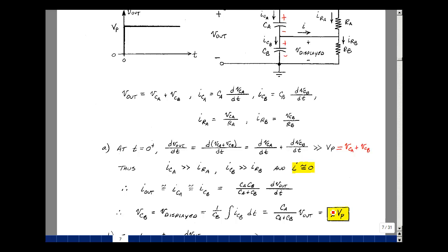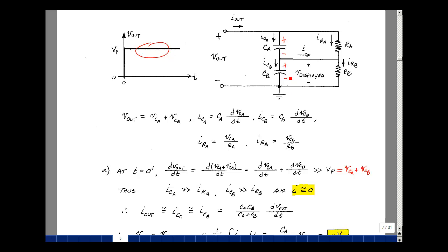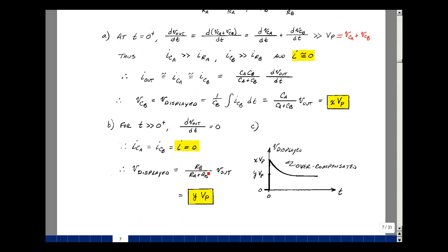For t greater than 0, we basically have a dc input. So the current in the capacitors is going to be equal to 0. And essentially all this current just goes down this path, and we get a voltage divider of one tenth. We always call this voltage divider of one tenths just y. Again, v out is just equal to v sub p.